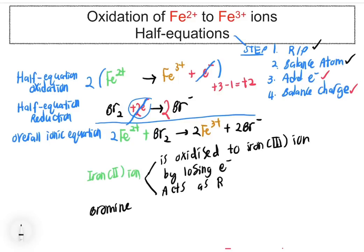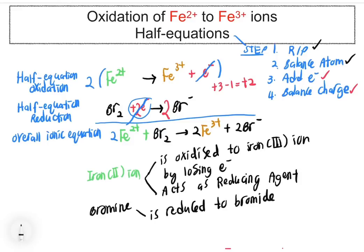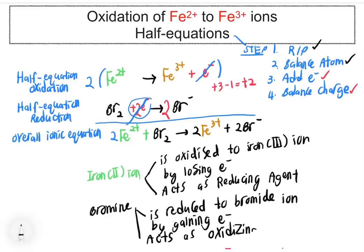In summary, iron(II) acts as a reducing agent and is oxidized to iron(III). Bromine is reduced to bromide ion by gaining electrons and acts as the oxidizing agent.